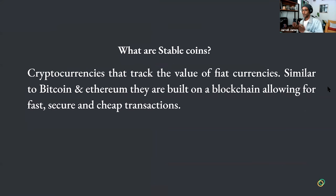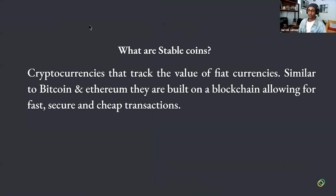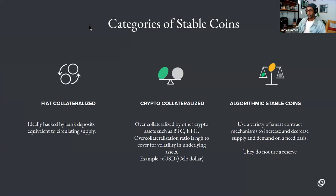Stable coins are cryptocurrencies that track the value of fiat currency — similar to Bitcoin and Ethereum, they're built on a blockchain allowing for fast, secure, and cheap transactions. There's an important difference between programmatic stable coins and algorithmic, fiat-collateralized, or DOW-collateralized stable coins.